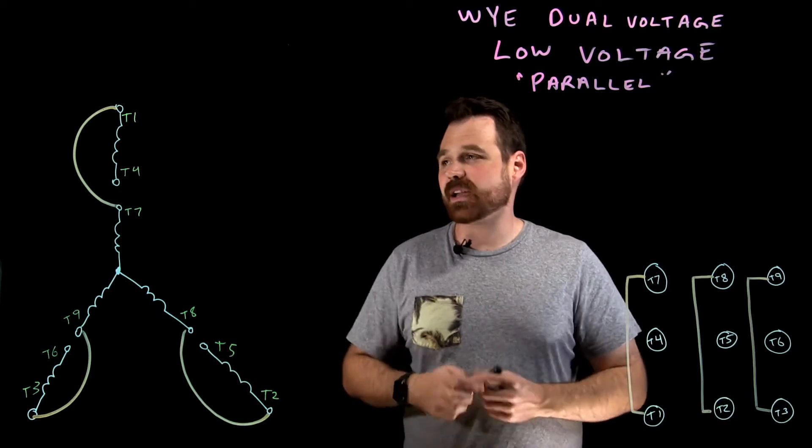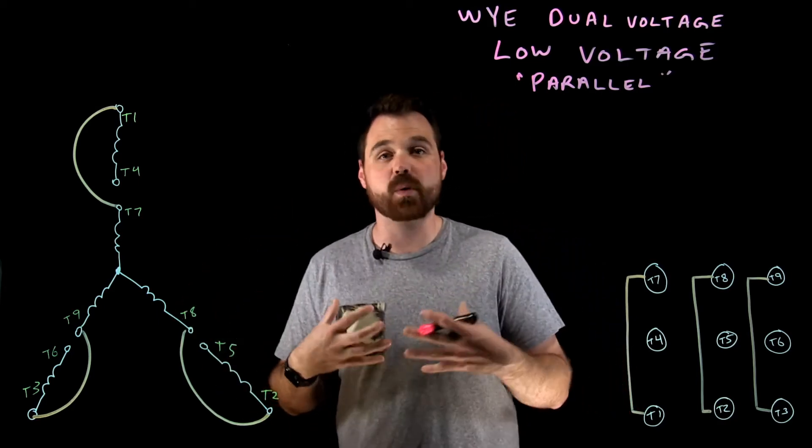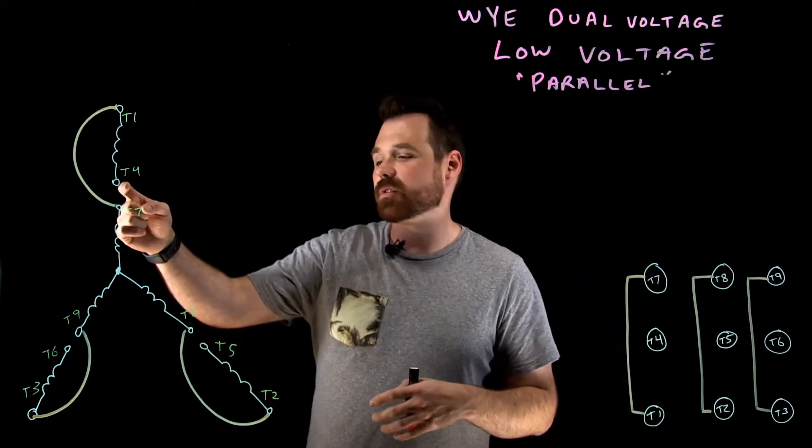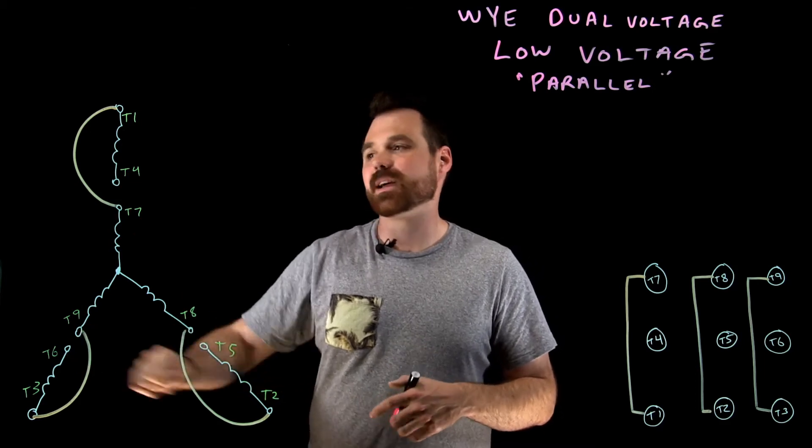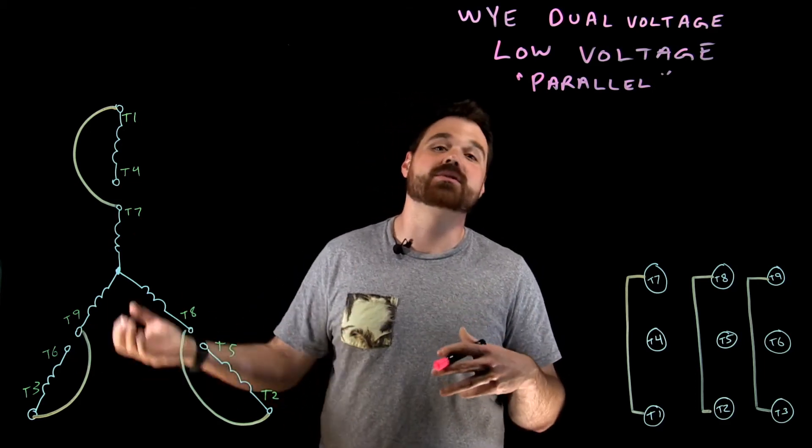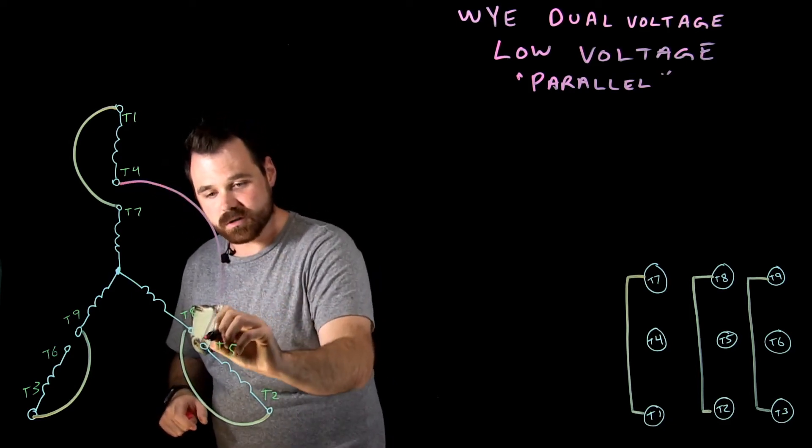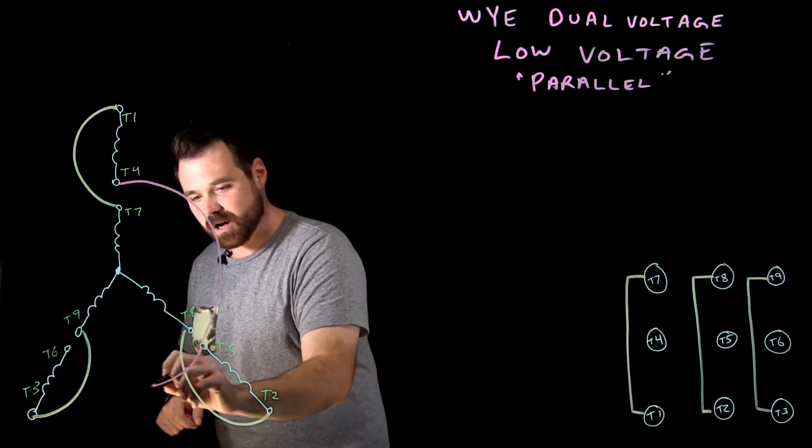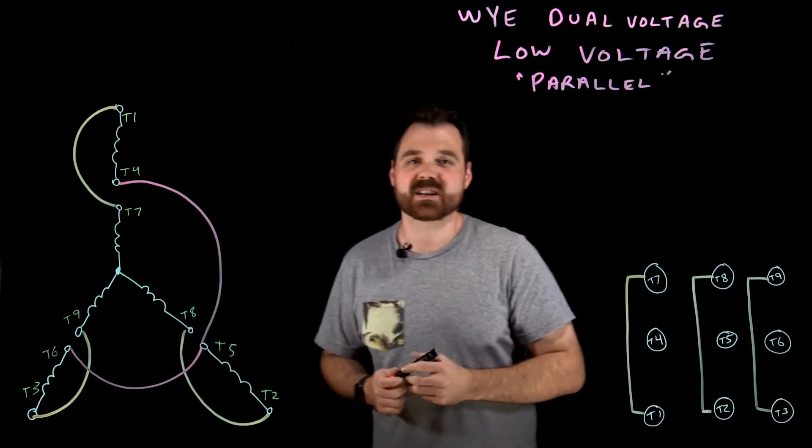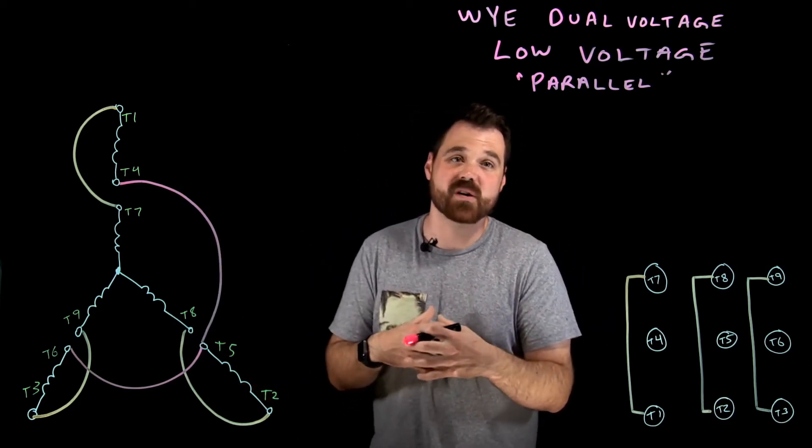Now step two is I need to make a Y point, or a star point, with T4, T5, and T6. I'm going to bring those together and connect them up. I'm going to go T4 to T5, and then T5 to T6, connecting those up into a star point.